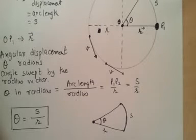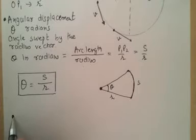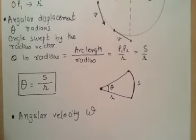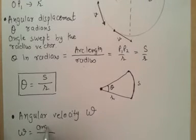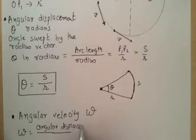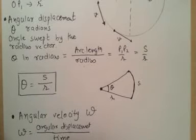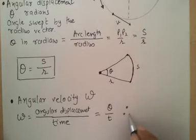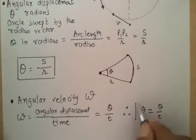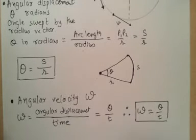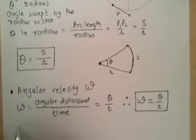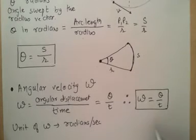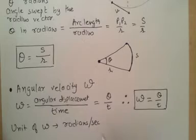So we have looked at angular displacement. The next term I am going to introduce is angular velocity, denoted by the symbol omega. Angular velocity omega is angular displacement upon time: omega equals theta by t. The unit of omega is radians per second, because theta is in radians and time is in seconds.